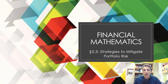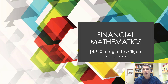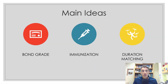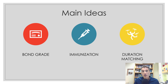Hey, Dr. Clark here. Welcome back to another financial mathematics video. This one we're looking at strategies to mitigate portfolio risk. Let's take a look. So first, just the notion of grading bonds, and then the idea of immunization, and then duration matching, which is a way to do immunization.